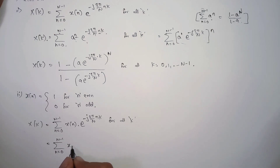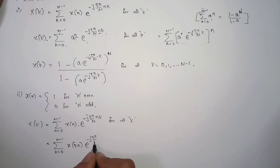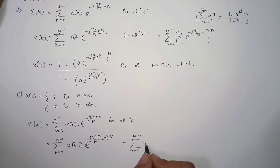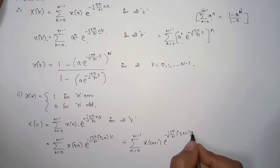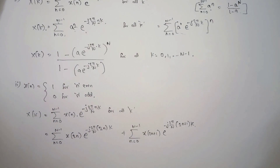We separate the even and odd terms. For even indices we have e to the power of minus j 2π/N times 2nk, and for odd indices the term involves e to the power of minus j 2π/N times (2n+1)k. Since x(n) is 0 for odd n, the odd sum drops out.